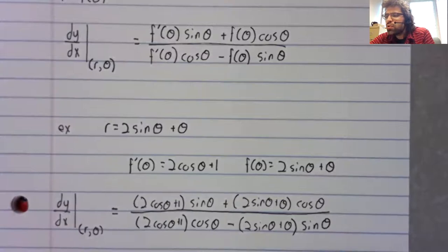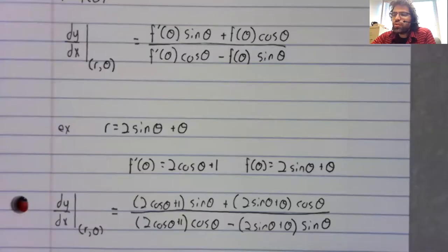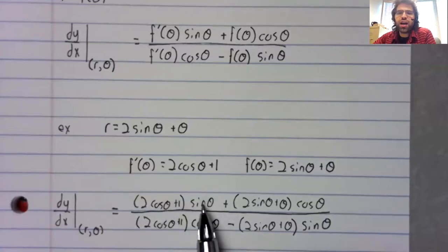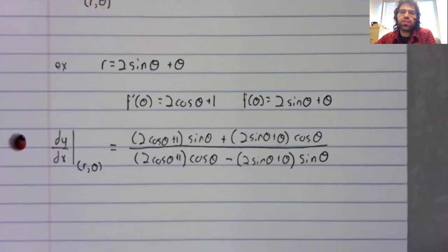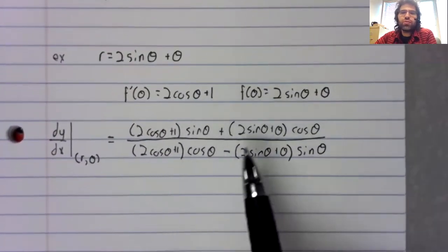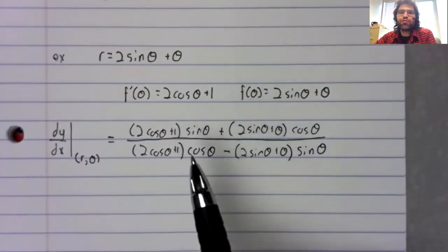You might be able to simplify this a little. I mean, you definitely can—you have a cosine sine and a cosine sine, you could combine those together. Nothing you do to this is going to make it really lovely, though.